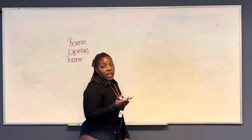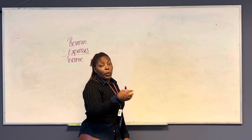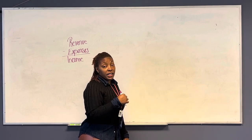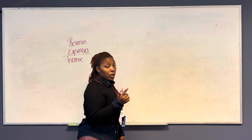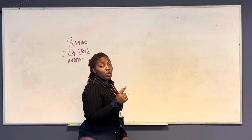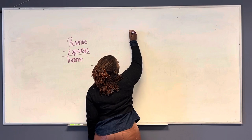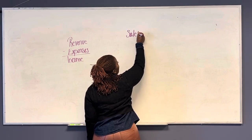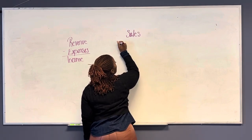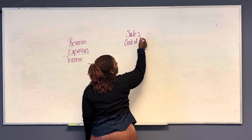Now let's talk about retail. When we talk about retail, that now means we have to go buy a product to sell a product. So when we're talking about income, you start with sales — the amount of sales — and then you subtract the cost of those sales.